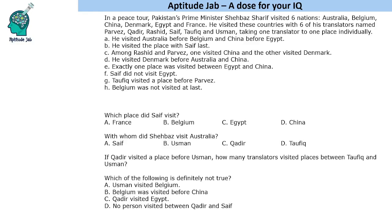Hello everyone, welcome to Aptitude Lab. This set says that in a peace tour, Pakistan's Prime Minister Shehbaz Sharif visited six nations: Australia, Belgium, China, Denmark, Egypt, and France. He visited these countries with six translators and took one translator to each place individually — one translator per country.